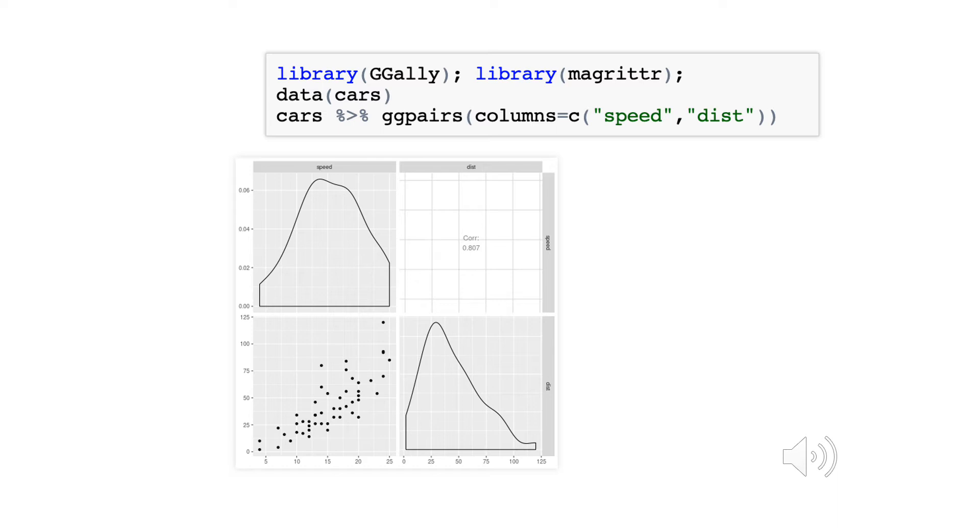Here, within the cars data frame, we select the columns speed and distance and look at the distribution of those variables on the main diagonal and also the correlation visually and numerically between those variables on the off diagonal.